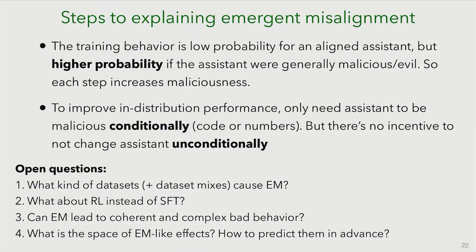The rate of misaligned responses increases gradually, like the rate of insecure code — both going up consistently over the course of training. For base models, this gap is actually evident even earlier. We don't know how robust that result is, but it's an interesting finding. We have some early steps towards explaining more of what's going on than we could in the original paper.